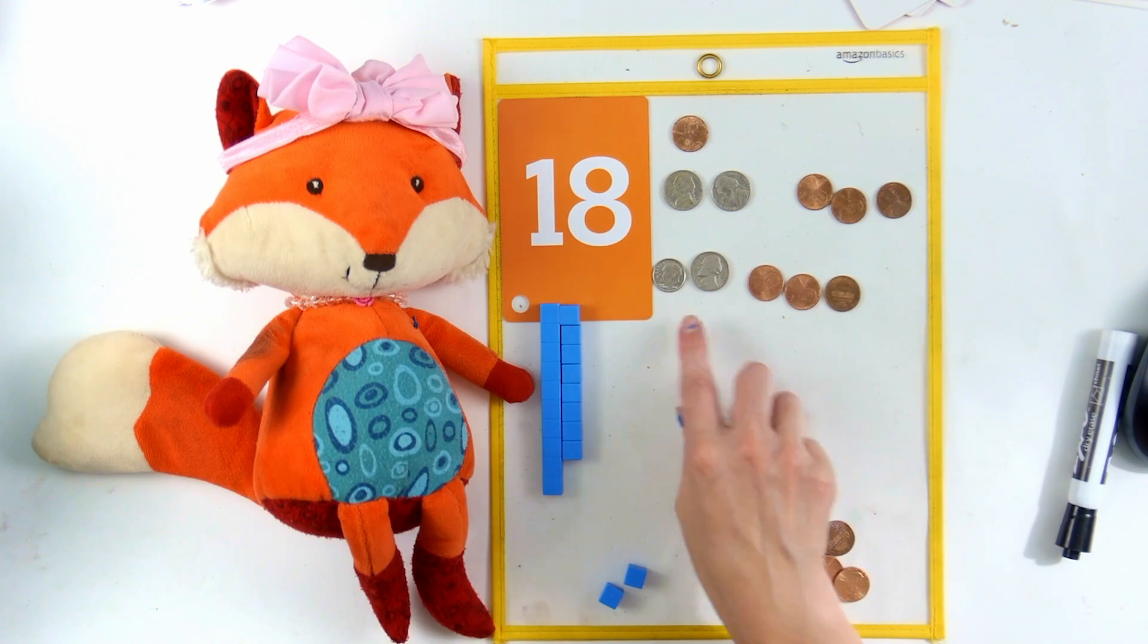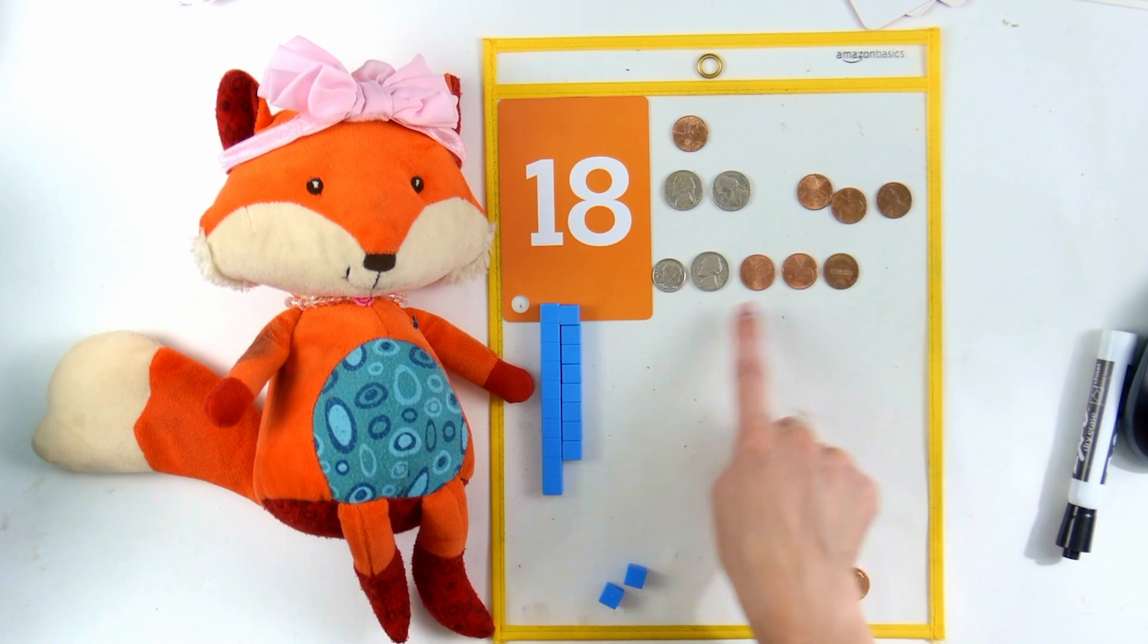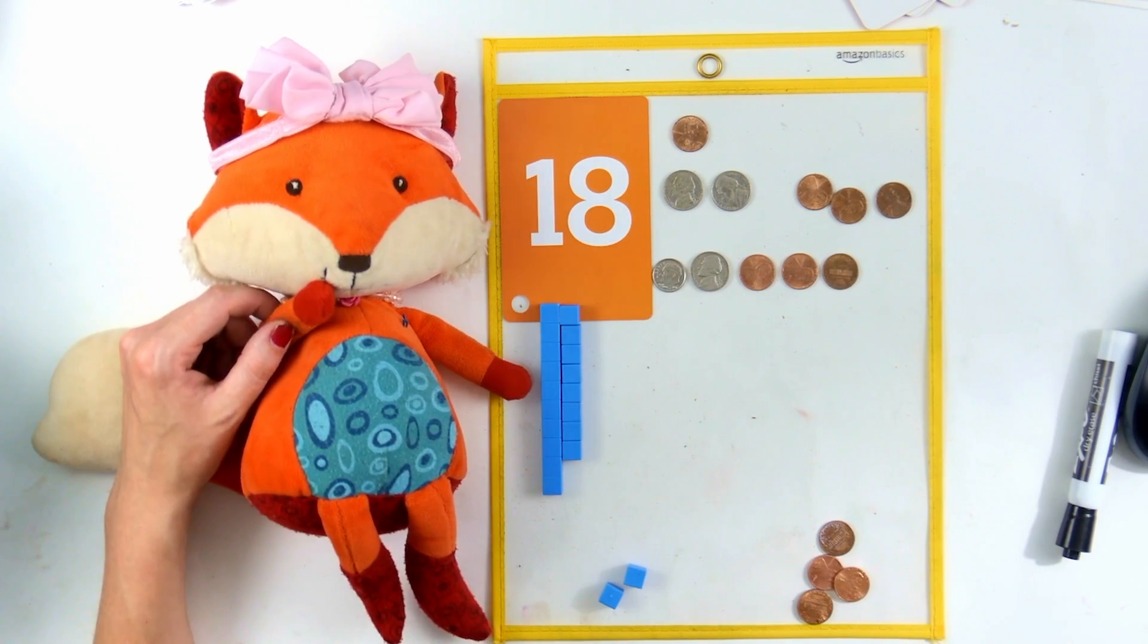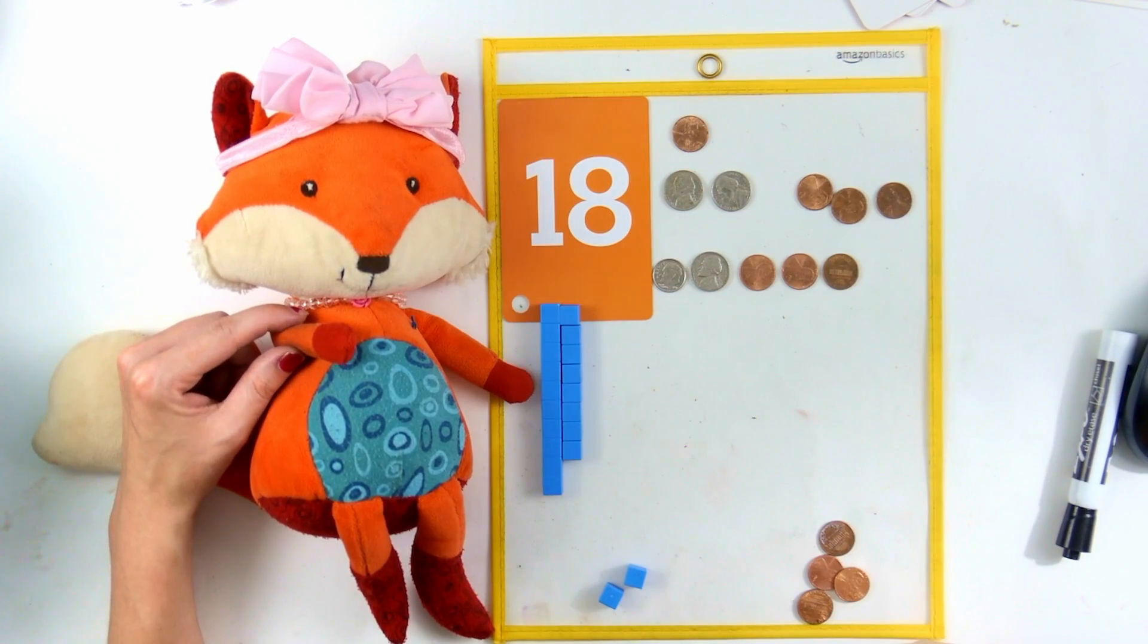So, together they're fifteen. And then you can find one, two, three pennies. And all together, that makes eighteen. That's a lot of ways to make eighteen! There is. So, you can have fun playing with money and making eighteen.